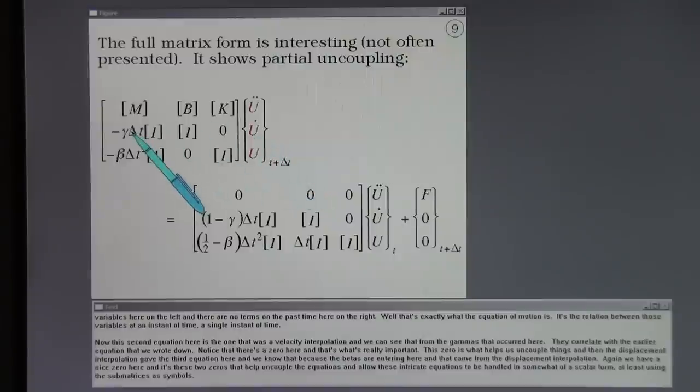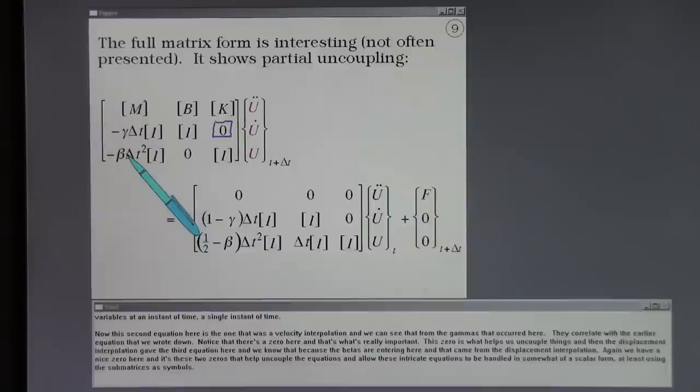That's exactly what the equation of motion is. It's the relation between those variables at an instant of time. Now the second equation here is the one that was a velocity interpolation. And we can see that from the gammas that occurred here. Notice that there's a zero here and that's what's really important. This zero is what helps us uncouple things. And then the displacement interpolation gave the third equation here. And we know that because the betas are entering here. Again we have a nice zero here. And it's these two zeroes that help uncouple the equations and allow these intricate equations to be handled in somewhat of a scalar form.